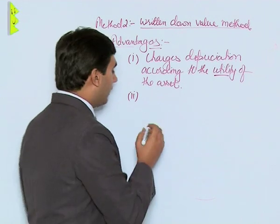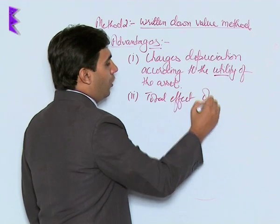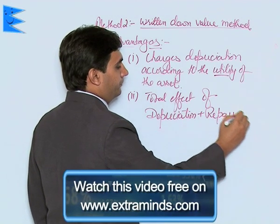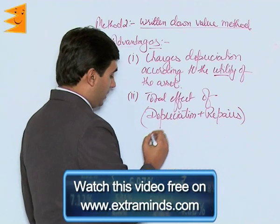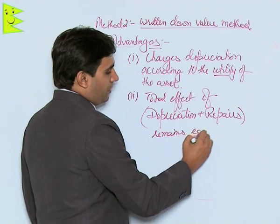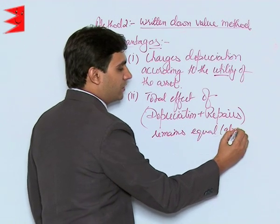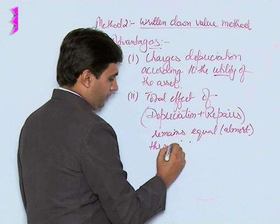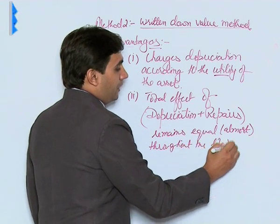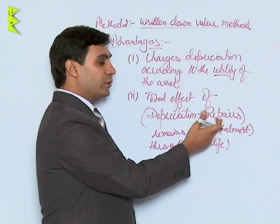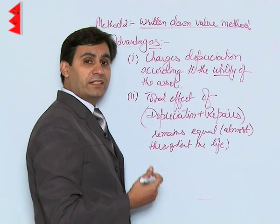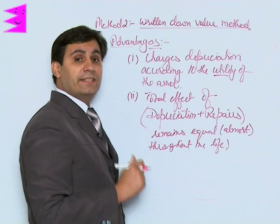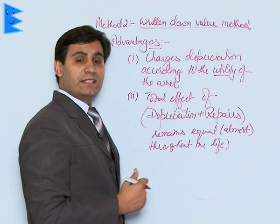The second advantage of this method is that the total effect of depreciation plus repairs remains almost equal throughout the life of the asset. In the initial years, depreciation is higher, but since the asset is new, the repair costs are low. When the asset reaches the fag end of its life, depreciation becomes lower and repair charges become higher. So the total almost remains the same, and hence the net effect on the profit and loss account is consistent, making the accounts more easily comparable.